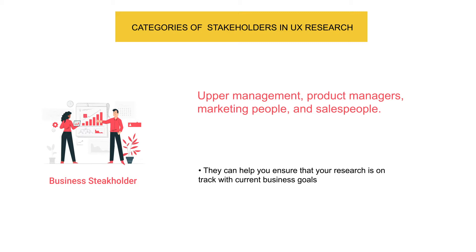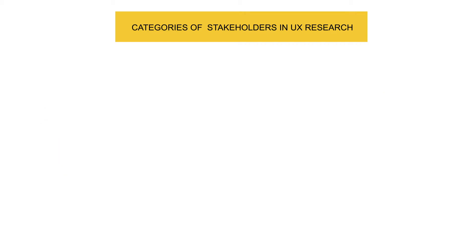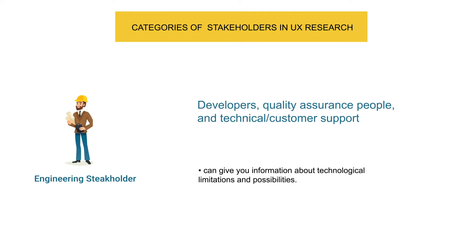Business stakeholders can help you to ensure that your research is on track with the current business goal. Engineering stakeholders — for instance, developers, quality assurance people, and technical or customer support — can give you information about technological limitations and possibilities.